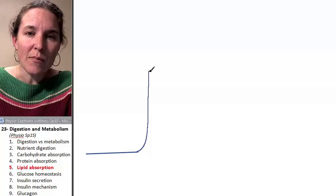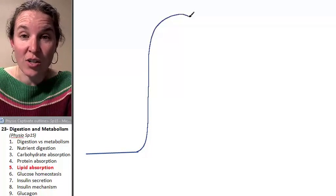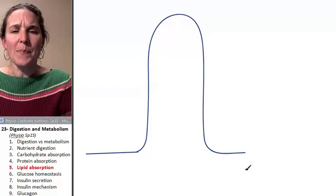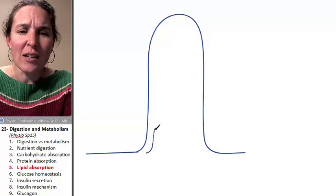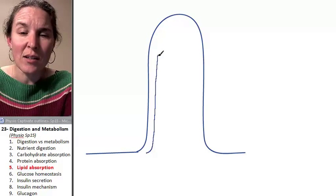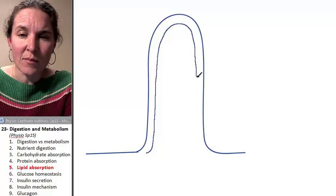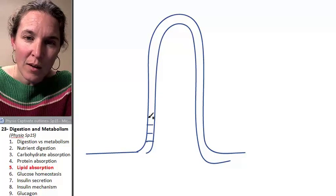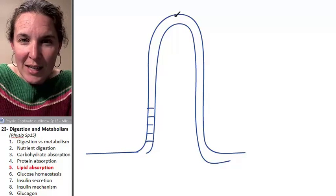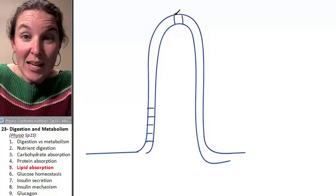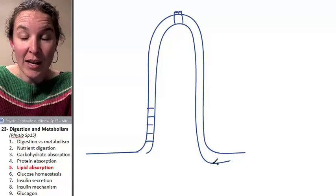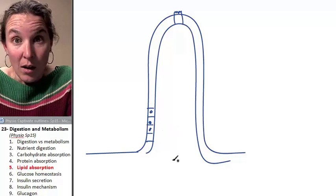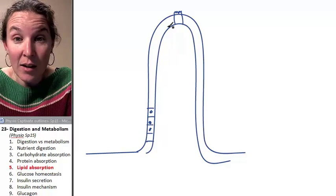We also have giant structures called villi lining the epithelium. This is representing individual epithelial cells. Each single cell has microvilli. This is a line of epithelium.